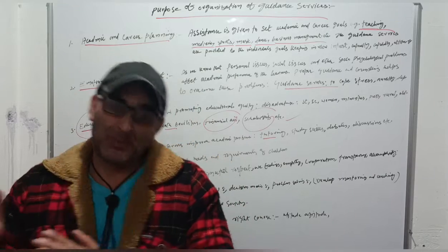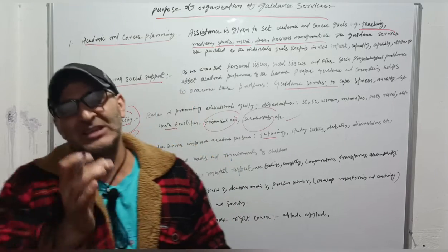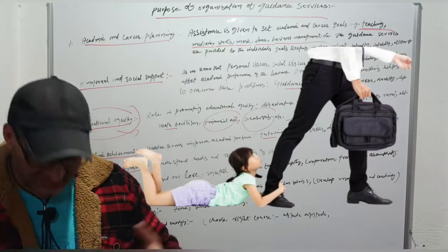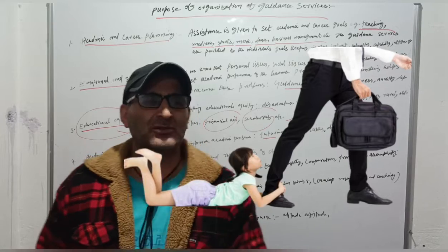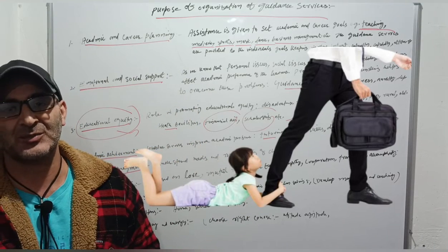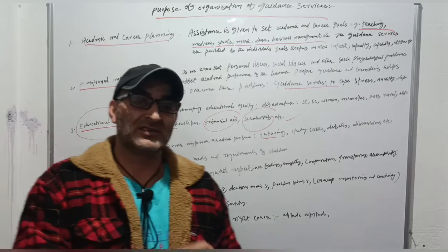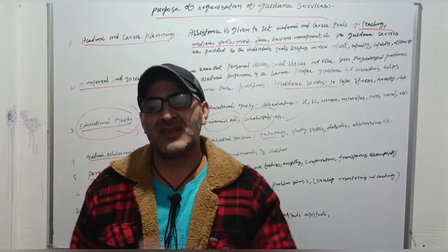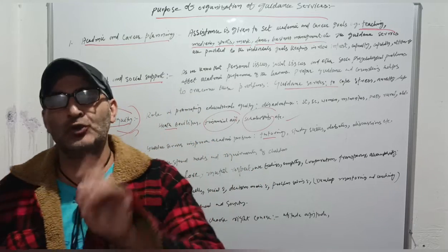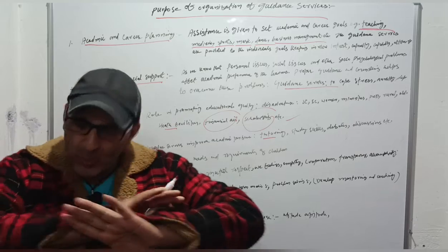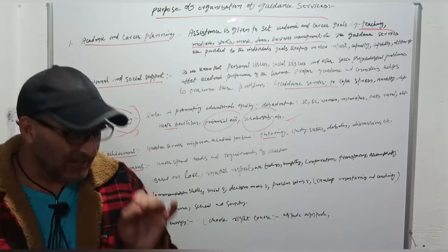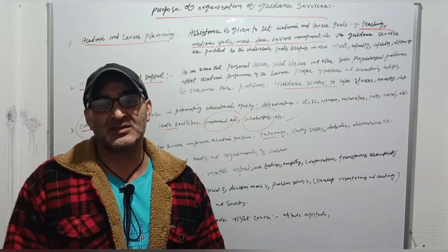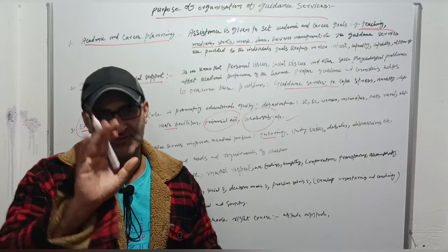When a gap develops between parents and children, child rejection occurs. Child rejection gives birth to a number of socio-psychological problems like self-doubt, confusion, stress, depression, anxiety, and so many other problems. In order to overcome these problems, guidance should be given not only to learners but also to their parents.